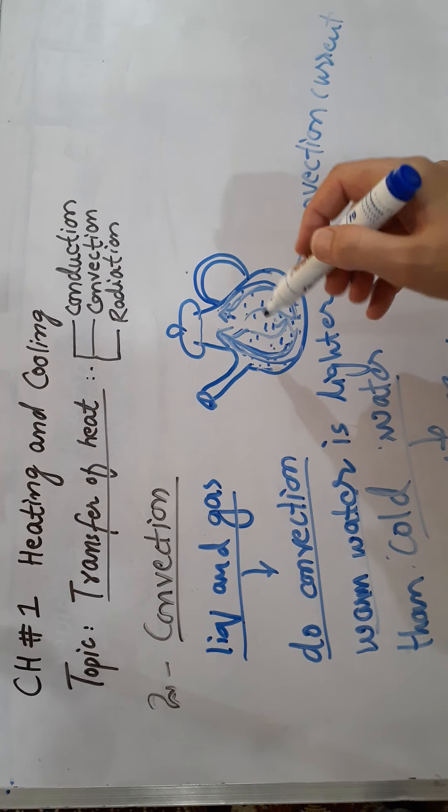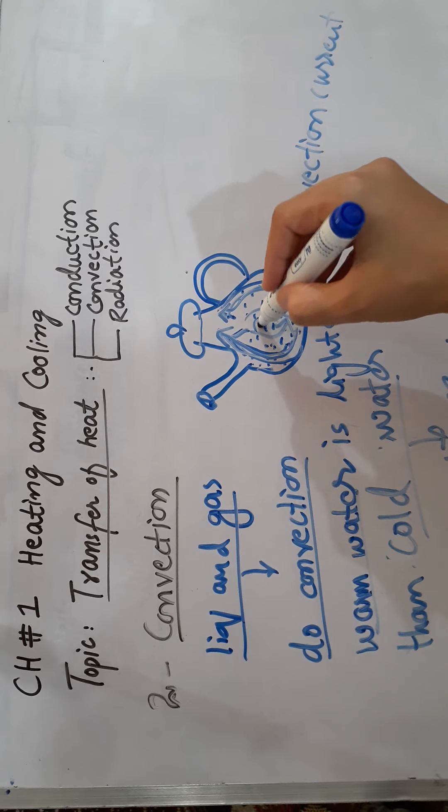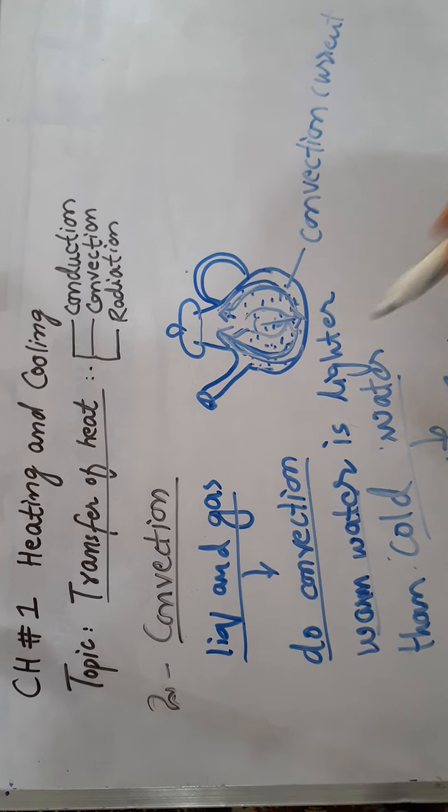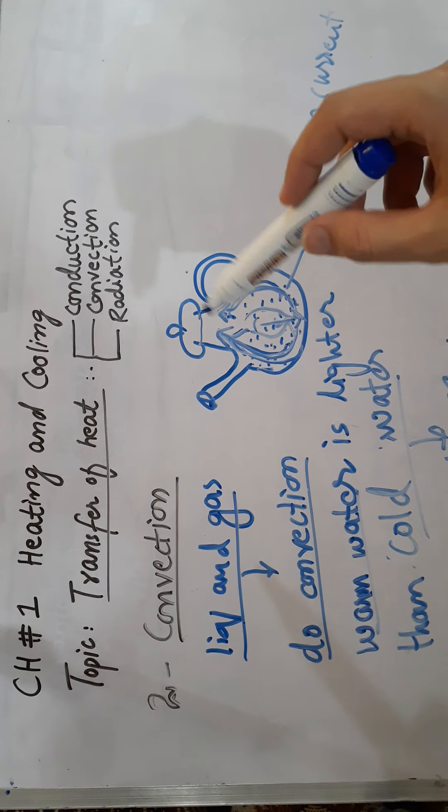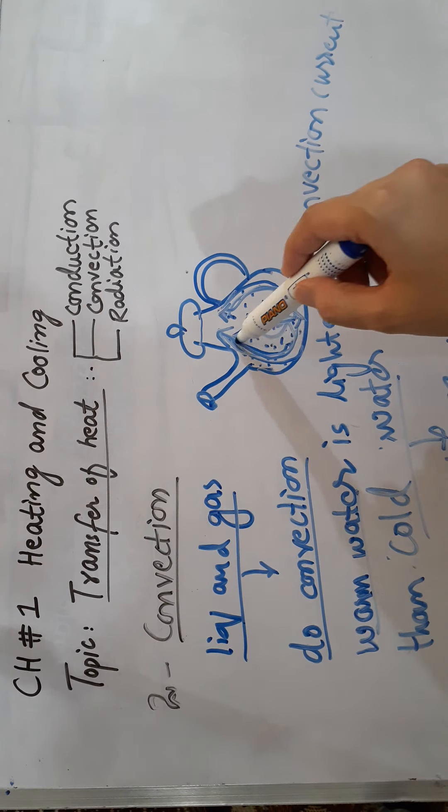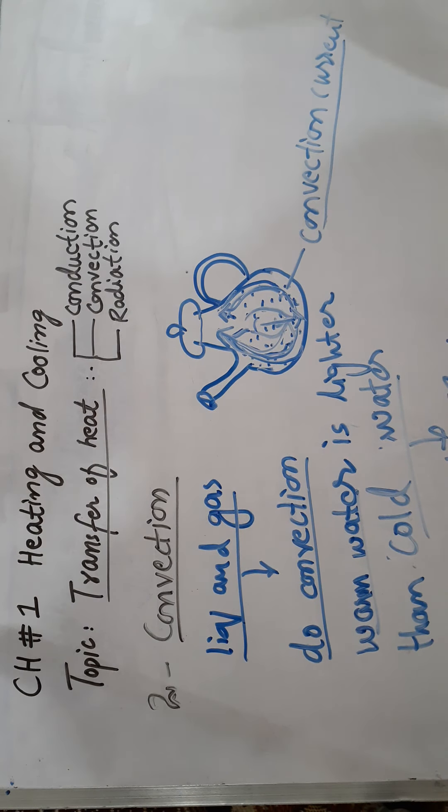Less denser honne ki wajah se, oopar ki taraf jane lag jata hai. Woh cold water, jiski density zyadha hai, woh níche ki taraf hana shurru kar dayeta hai. Is stream ko, is circulation ko, circulating stream ko, joh kettle ke anndar ho rhi hai, isse kehtethe hai convection current.